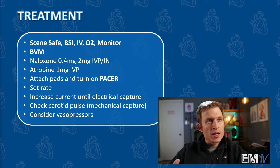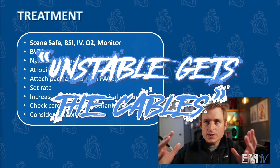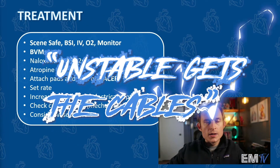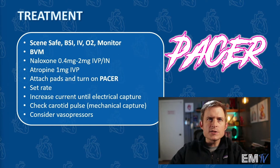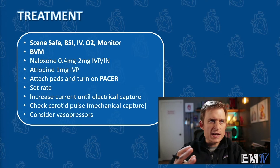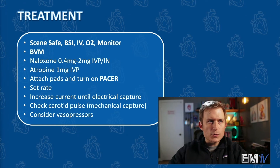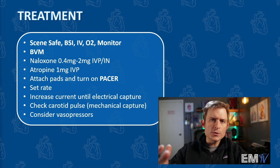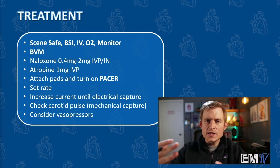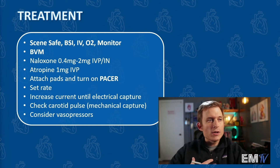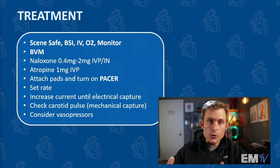Because this patient is unstable, and so the saying goes, unstable gets the cable — the most definitive treatment here per ACLS is to actually apply transcutaneous pacing. We'll attach the pads to the patient's chest and then turn on our pacer. First thing we'll do is set the rate, which can be anywhere between 60 and 100 pulses per minute. Then we'll increase our milliamperage, or our current, until we see electrical capture. We'll then check a carotid pulse to make sure we have mechanical capture. At this point, you've given me more than enough information to earn full points.